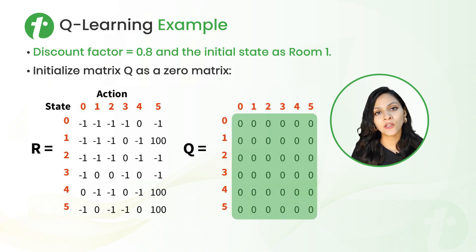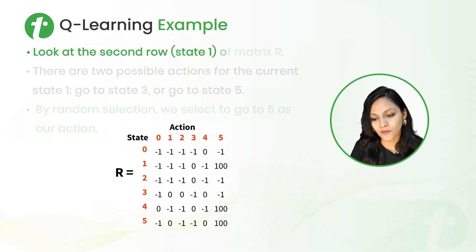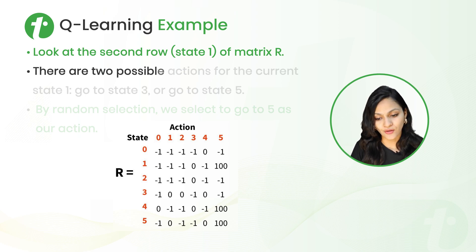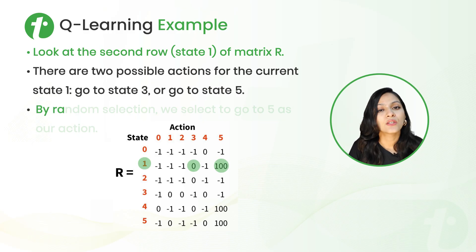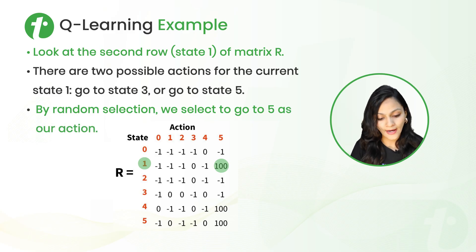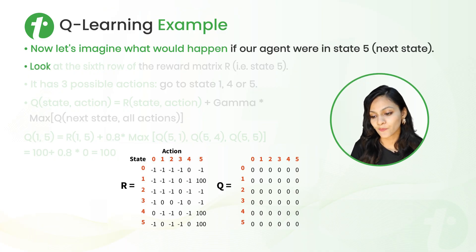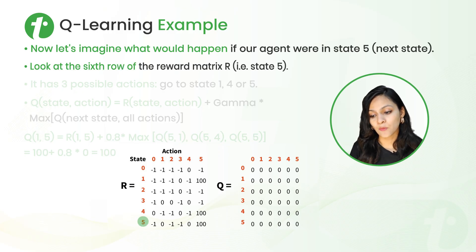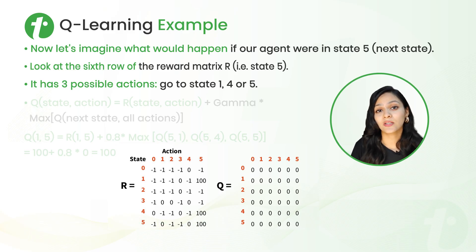Initially all Q-values are initialized to zero as represented in matrix Q. Looking at row one of matrix R, there are two possible actions: from one to three, and from one to five. Let us consider that we are moving from state one to five, meaning we are taking action five. Now let's imagine what would happen if our agent is in state five — the next state. From state five, the agent can move to one, four, or five, giving us three possible actions.